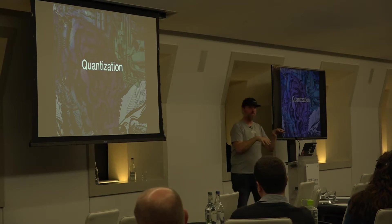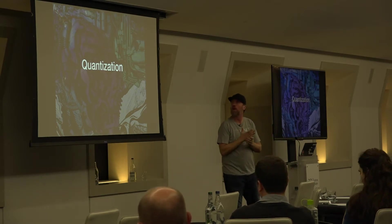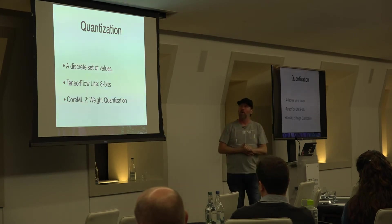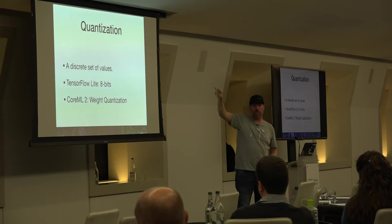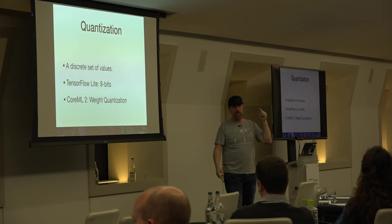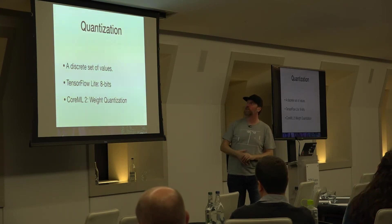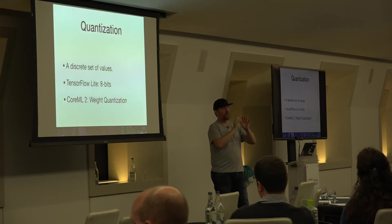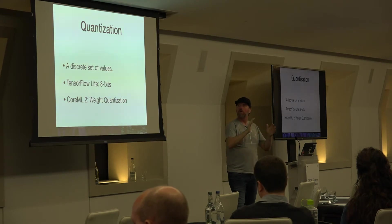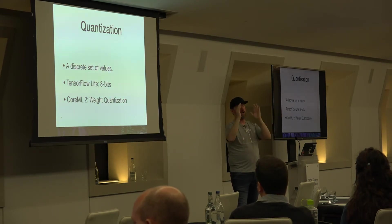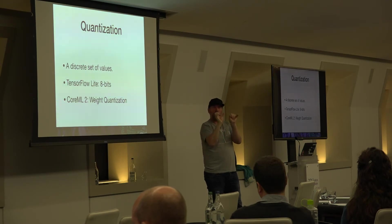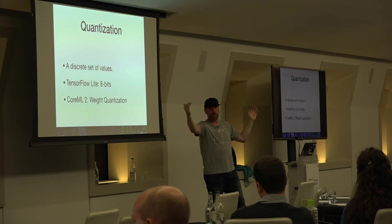Quantization is important when using models on a mobile phone. Quantization means using a discrete set of values — the idea is to group continuous values into bins. For example, from 0.0 to 1.0, you build groups — 1, 2, 3, 4, 5, 6, or 8 groups. This reduces the size of the model.